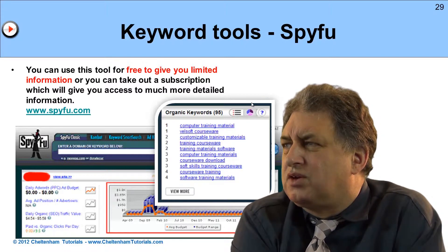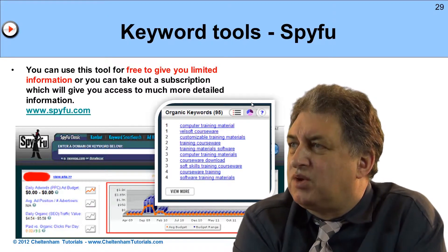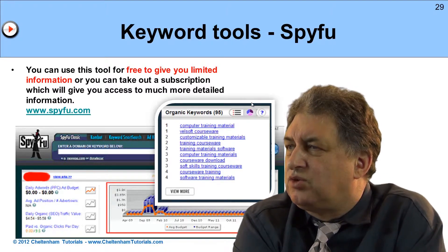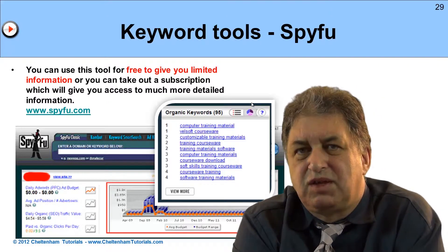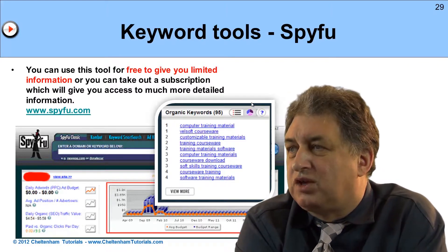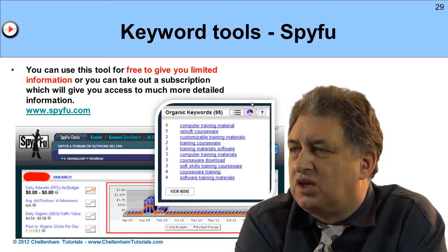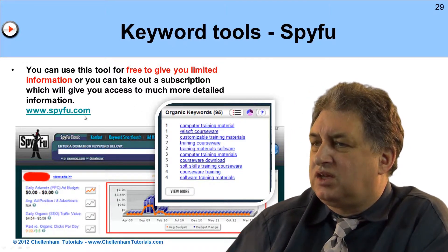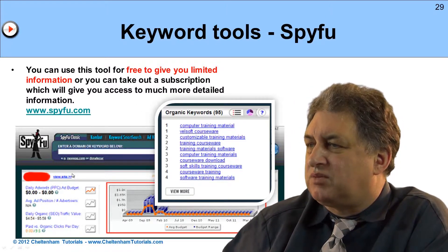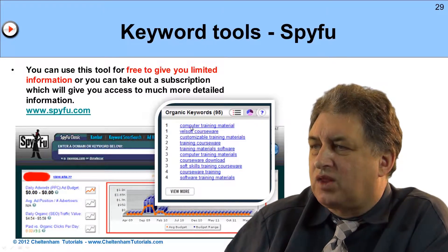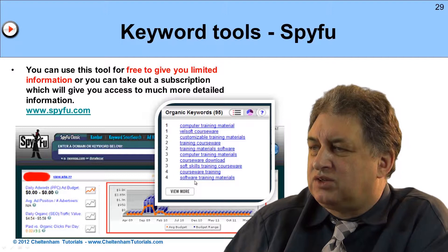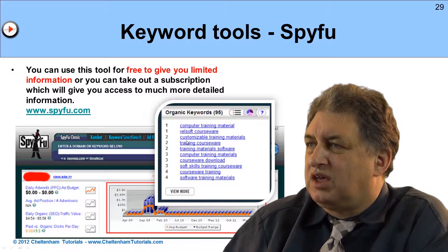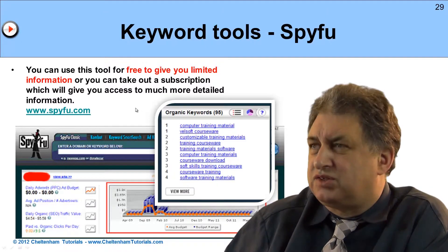We won't look at these in detail now — we'll cover these elsewhere. But there are various keyword tools available. SpyFu is one. You can have a free version which gives you reasonably limited information, and you get more if you pay for the subscription. You can get information about what sort of keyword phrases are important for different people, and you can look at competitors' sites and get a fair amount of information using this.